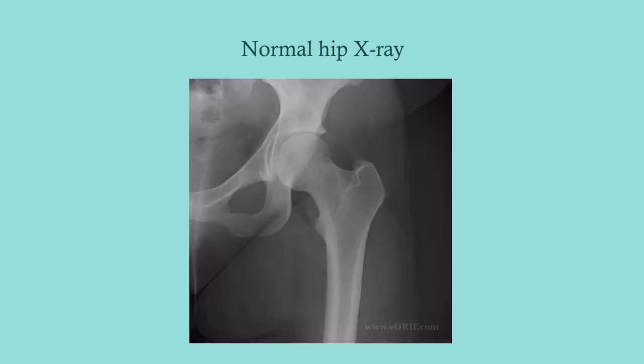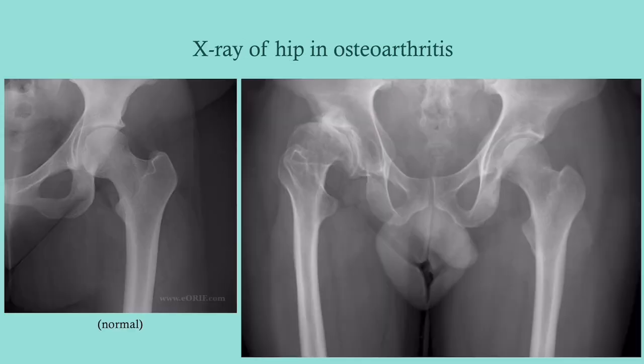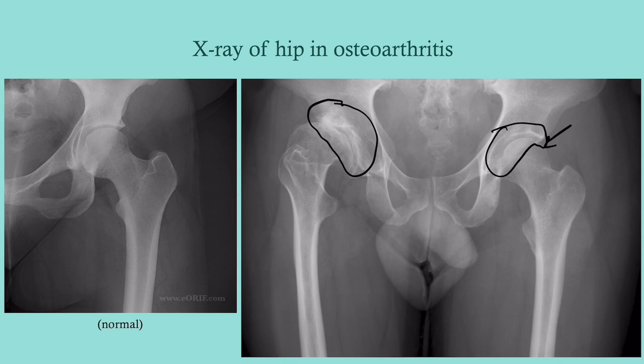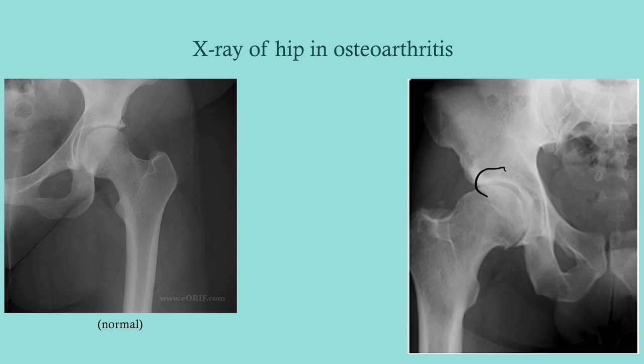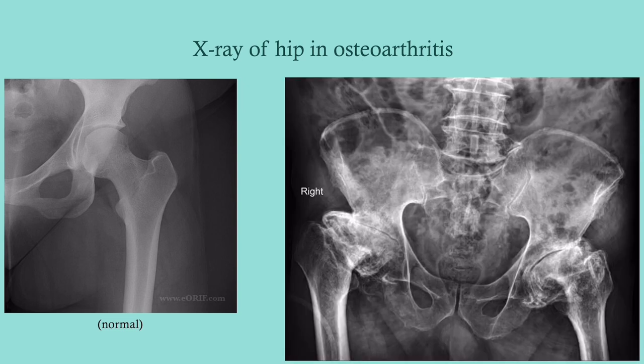Here's a normal hip X-ray — notice the nice parallel space within the joint. Now here on one side, on the patient's left, it looks fairly normal. But on the right you can see destruction of the surrounding bone, loss of joint space, and some inflammation. Remember, this is not an inflammatory arthritis, but you can get some mild inflammation — it's not inflammatory in etiology, but you can have some inflammation in the synovial fluid and surrounding tissue.